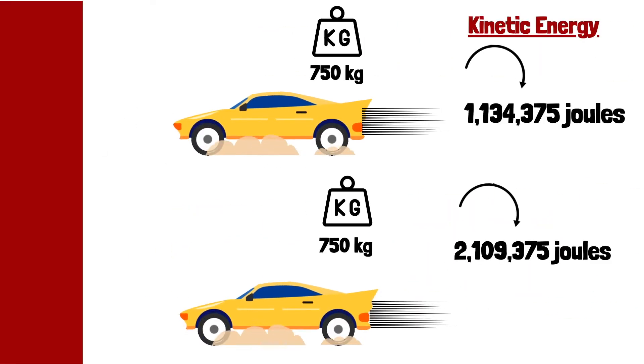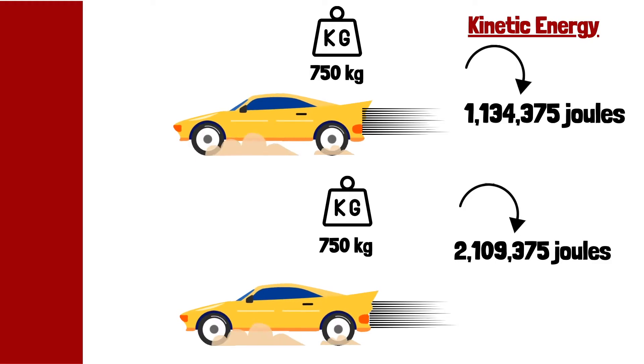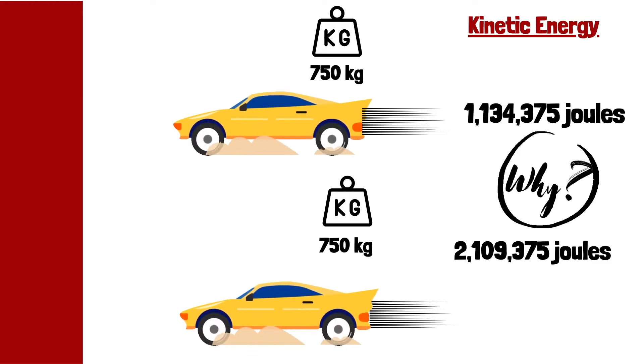In our second example here, we have two cars with the exact same mass, 750 kilograms, and yet their kinetic energy is substantially different. Why?